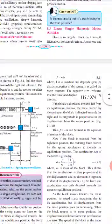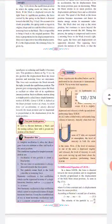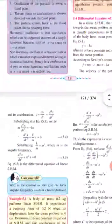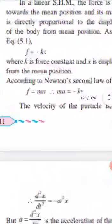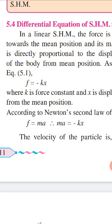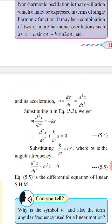We also derived a differential equation for linear simple harmonic motion. Starting from F directly proportional to minus X, meaning F equals minus kX. By Newton's second law F equals mass times acceleration, so ma equals minus kX. Since acceleration is the double derivative of displacement, we get m d²X/dt² equals minus kX, which gives d²X/dt² plus (k/m)X equals 0. Setting k/m equal to ω², the differential equation becomes d²X/dt² plus ω²X equals 0.